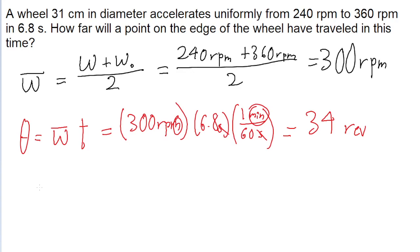So to find this length, we simply take the angular distance we just found, 34 revolutions, and multiply that by the circumference of the wheel, because each circumference will correspond to one revolution.